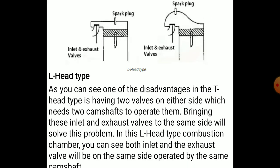The second type is the L-headed type combustion chamber. One disadvantage of the T-headed type was having valves on either side requiring two camshafts. In the L-headed type, both the inlet and exhaust valves are brought to the same side, solving this problem — only a single camshaft operates both valves.